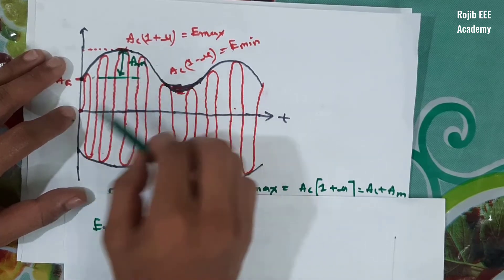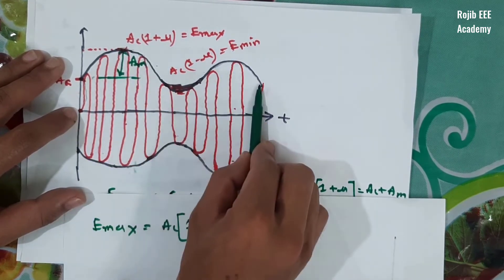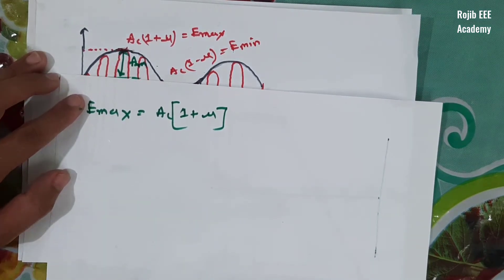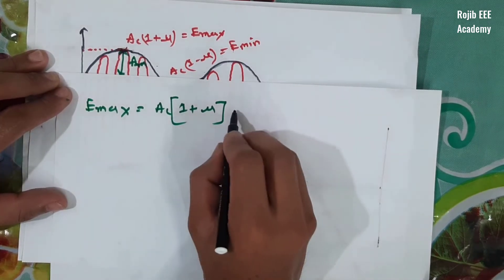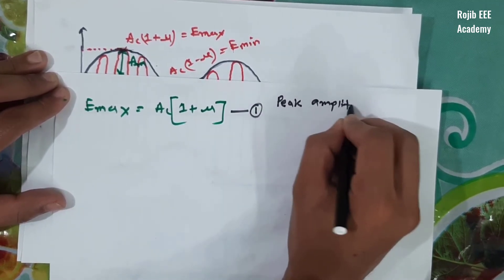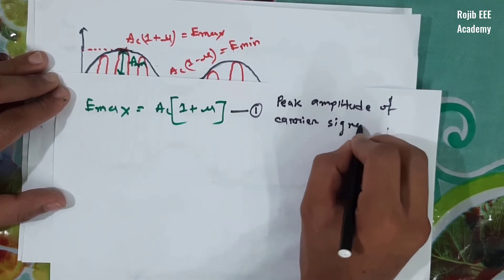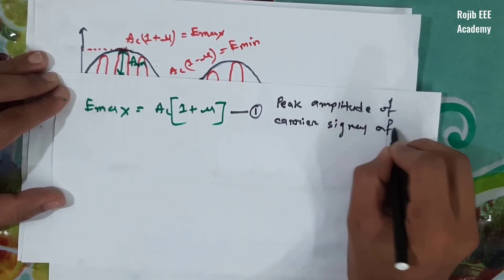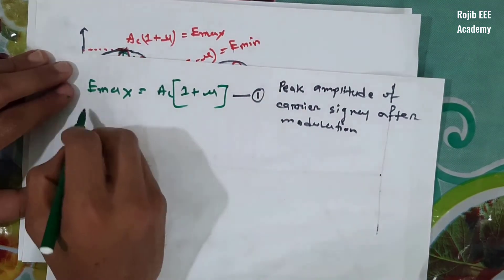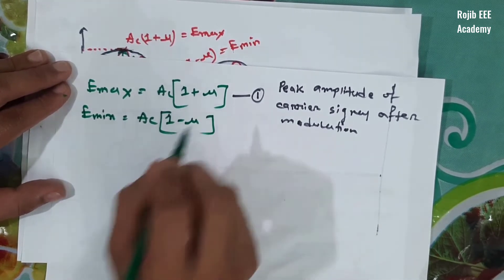The carrier signal has an envelope. The actual waveform is the same. The envelope represents the message signal. The maximum is the peak amplitude of the carrier signal after modulation. That means peak amplitude of carrier signal after modulation. The coefficient gives E_minimum = Ac(1 - mu). This is equation number 2.